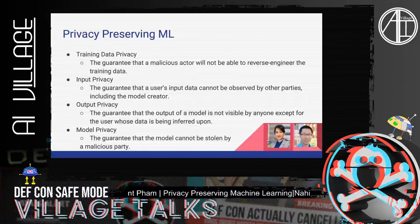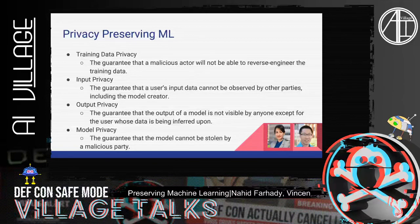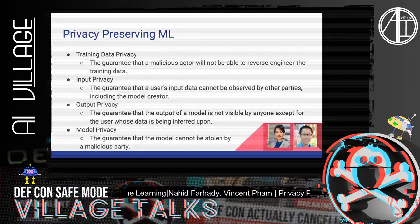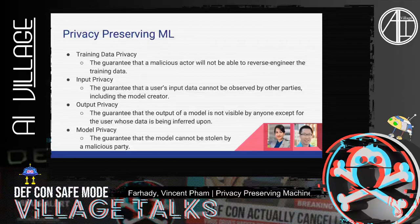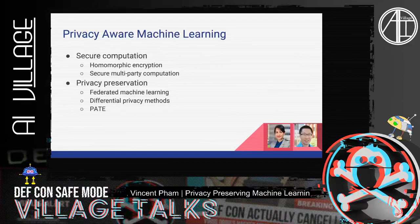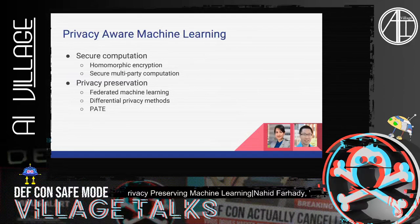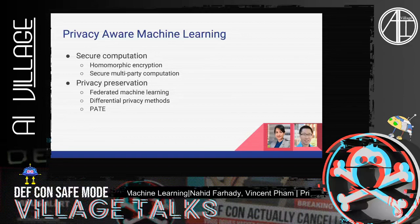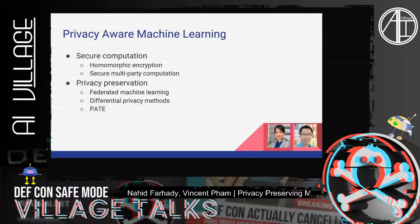To preserve privacy, we have four main points to protect: the training data, and the input and output of the model shouldn't be visible to anyone not authorized, and finally model privacy, which ensures that the model cannot be stolen by any malicious party. Two main categories to preserve privacy are secure computation and privacy preservation. In secure computation, we transform or distribute computations in a way not readable by unauthorized persons. In privacy preservation techniques, we use noise injection or masking and hiding techniques.